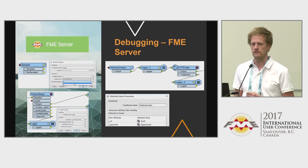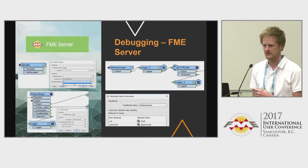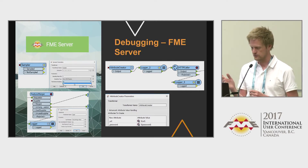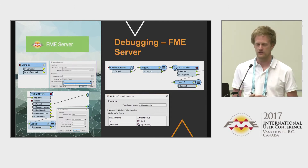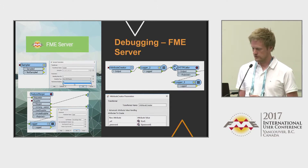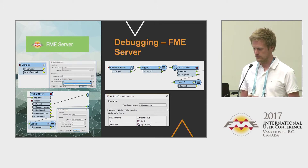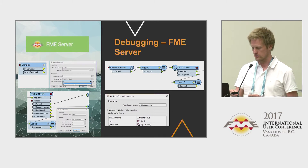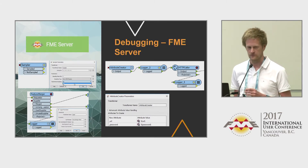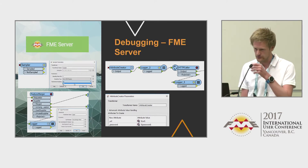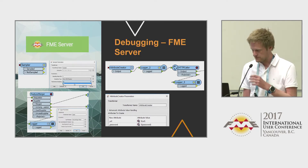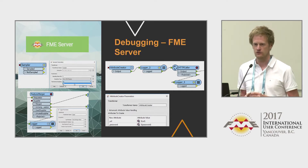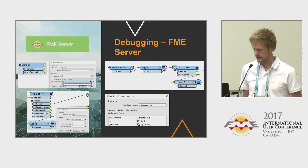On FME Server it's a bit different — you can't have any inspection and you have to read the log files. I use the same approach: the Sampler, and on all the rejected ports I have a Logger. Whenever something fails, it will be written in the log file showing which features failed. That's the easiest step before you want to do proper error handling on your workspace — just add a Logger to all the rejected ports.